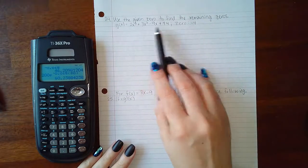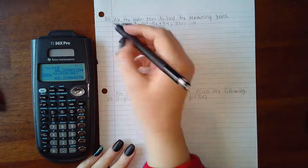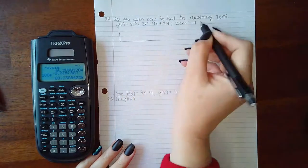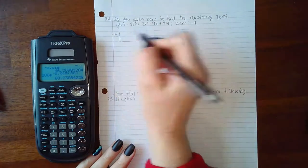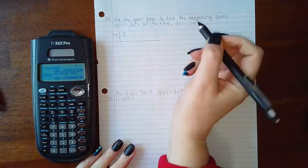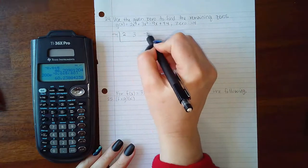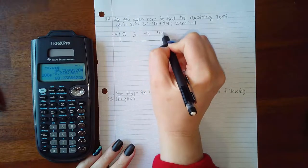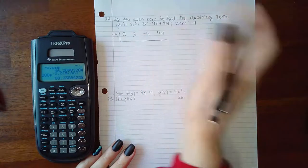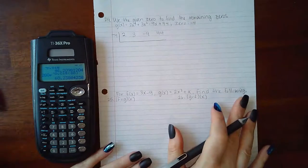If we want to divide this we can use synthetic division, which means I will use the zero that I was given and then I will use only the coefficients here. So I have x cubed, x squared, x, and my constant. There are no missing terms so I don't have to fill in anything with a zero.